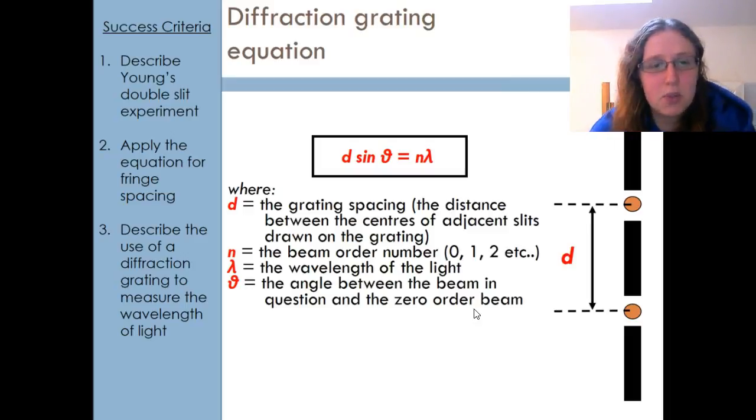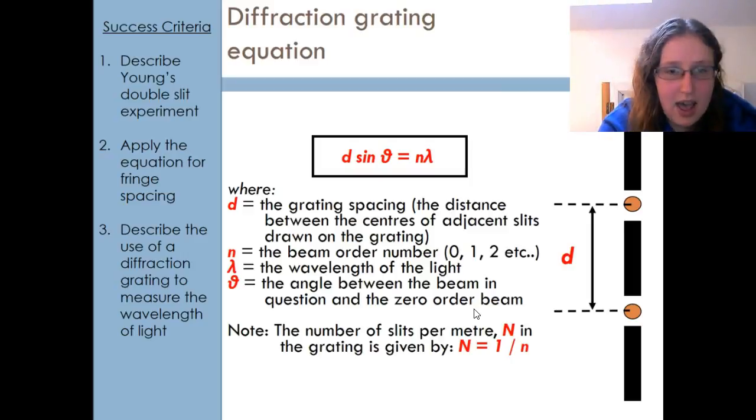Lambda is the wavelength of the light. Theta is the angle between the beam that I'm interested in and the 0 order beam. As I said before, the number of slits per millimeter in the grating is given by 1 over d. It's just the opposite of what I said before.